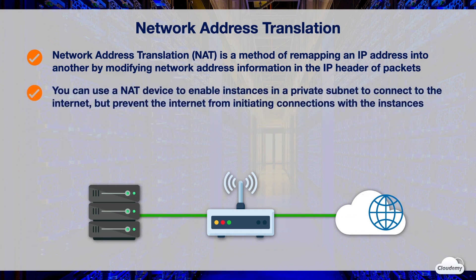You can use a NAT device to enable instances in a private subnet to connect to the internet or other AWS services, but prevent the internet from initiating connections with the instances. A NAT device forwards traffic from the instances in the private subnet to the internet or other AWS services, and then sends the response back to the instances. When traffic goes to the internet, the source IPv4 address is replaced with the NAT device's address, and when the response traffic goes to those instances, the NAT device translates the address back to those instances' private IPv4 addresses.